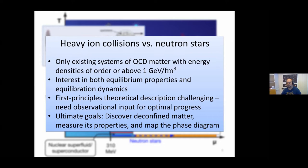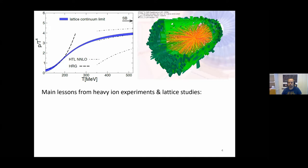In both cases there are challenges in the first-principles theoretical description. With heavy ion collisions, the challenges are typically related to the early dynamics rather than the bulk thermodynamic properties. On the neutron star side, we have many open questions also in very basic properties, like the structure of the phase diagram and how the equation of state and similar bulk thermodynamic quantities behave. And in both cases the goals are very similar: we want to discover deconfined matter, measure the properties of these systems, understand the theory more deeply, and ultimately map this phase diagram more accurately.